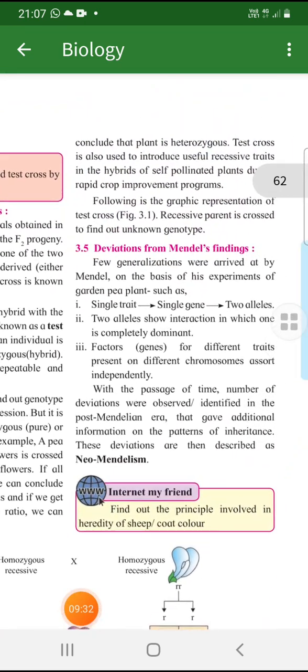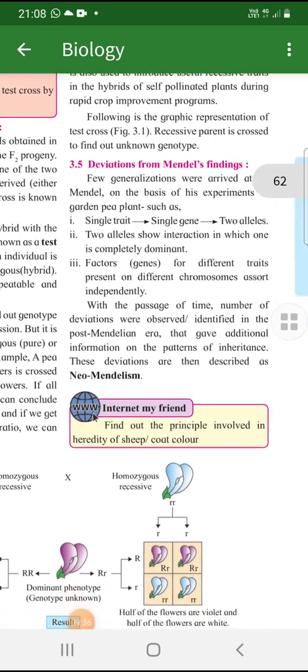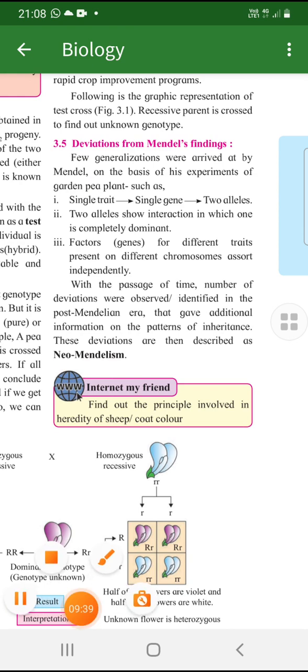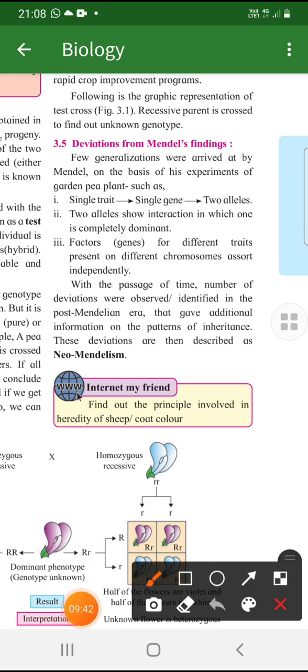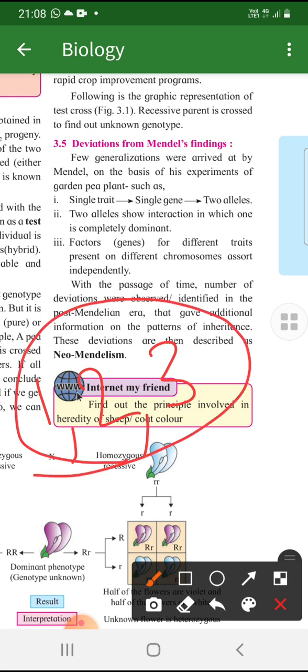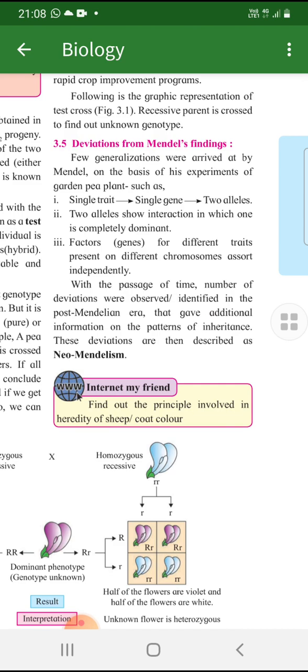Then we have next topic, deviation. Deviation ka matlab hota hai. Jho Mendel ne teen law bataye the. Law number one dominance ke baare mein. Law number two segregation ke baare mein, purity of gamete. Law number three independent assortment. Woh kisi ke saath bhi apna fusion kar sakta hai. So, that's the third law. Right? So, when you talk about these three laws, in ke negative forms aaye hai hai. That is deviation. Matlab jo Mendel ne bola woh sahi nahi tha. Kuch plants mein there were some contradictory characteristics that are called as deviations from Mendel's finding. That we are going to do in our class next class.